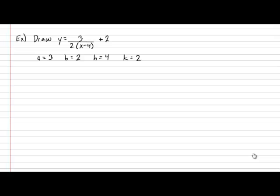First always begin by identifying your asymptotes. Our vertical asymptote is always represented by the rule x equals h and in this example our h value is 4. Our horizontal asymptote is always represented by the rule y equals k, and in this example our k value is 2.